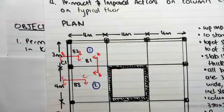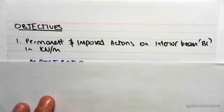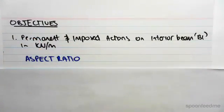Now the first thing we need to do is work out the aspect ratio to determine whether our system behaves, our slab rather, behaves like a one-way or two-way slab. Because the working out which one it is is going to be very different for the load path of the structure.